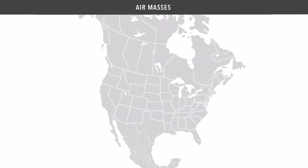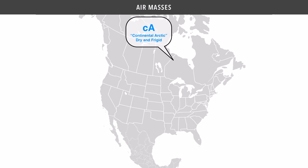There are five major types of air masses that impact the weather in the continental United States and North America as a whole. The first one comes down from far northern Canada, near the Arctic Circle. This is called a Continental Arctic air mass, abbreviated lowercase c, uppercase A.